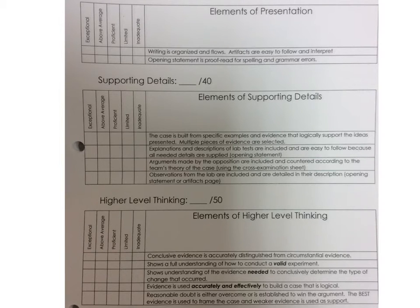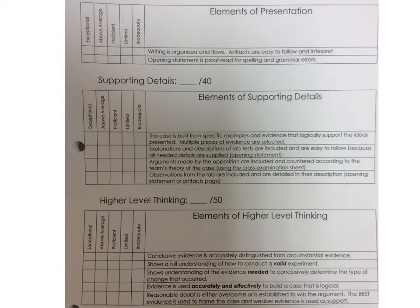For the second element — explanations and descriptions of lab tests. Many students neglected to do this. Go through my opening statement and find the places where I gave explanations and descriptions of lab tests that were conducted. The third element is arguments made by the opposition — that's the other team. Arguments made by the opposition are included and countered according to the team's theory of the case. I should see in your opening statement or cross-examination sheet references to the other team's theory and how you're going to counter it. Then, observations from the lab — things like what did you see when you did the splint test, the phenolphthalein pH test, or during the heating process itself.